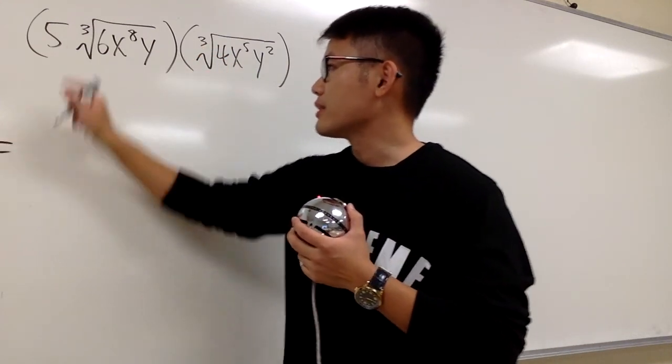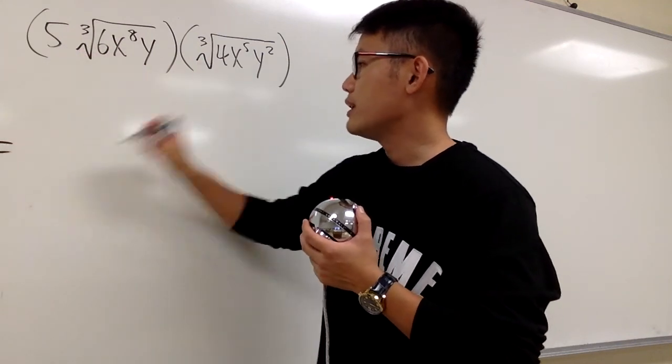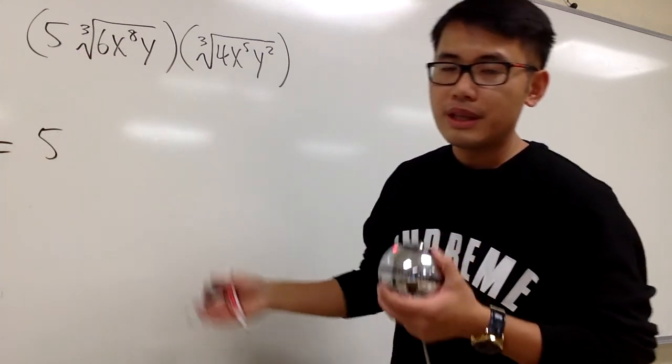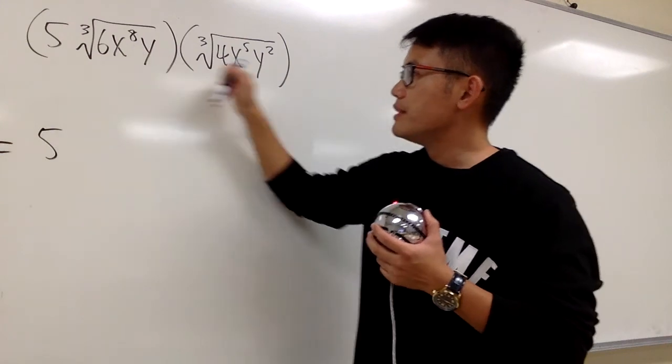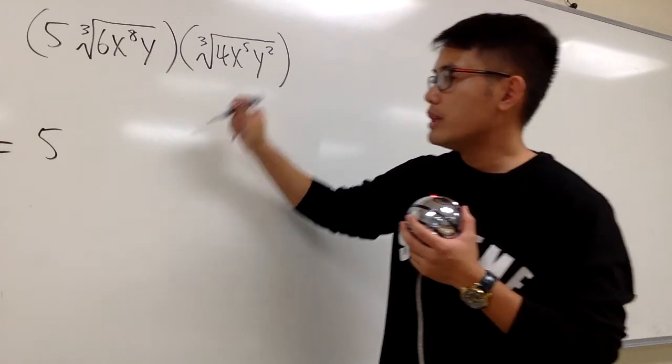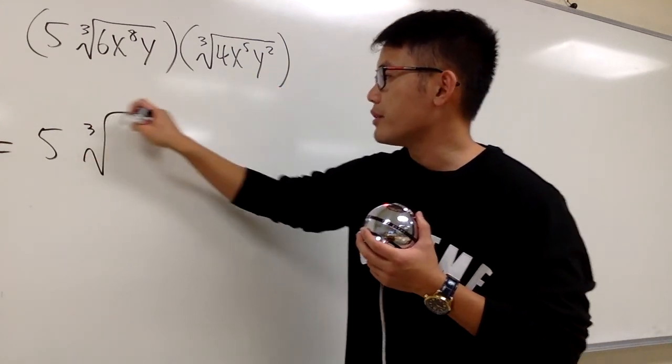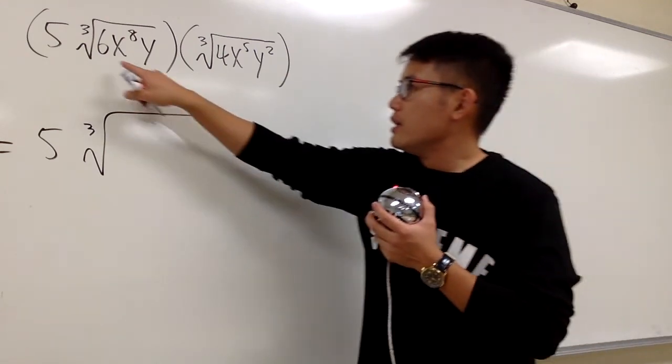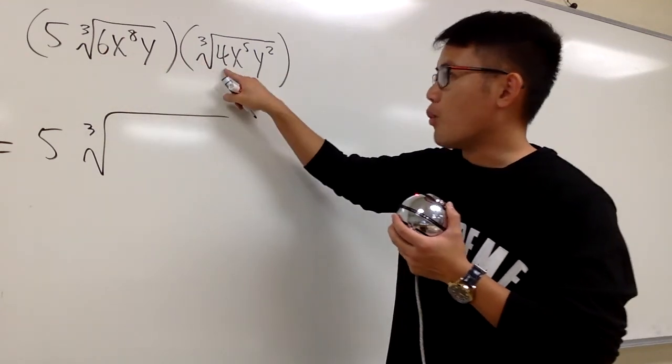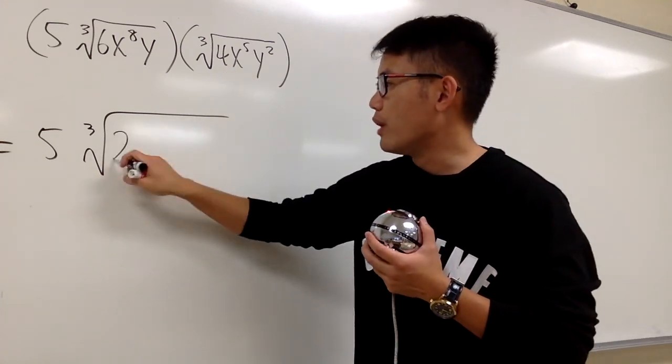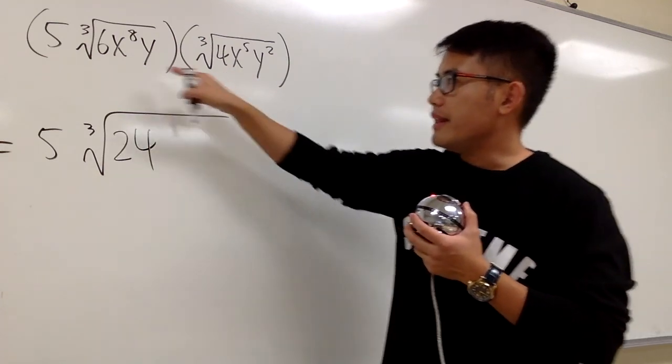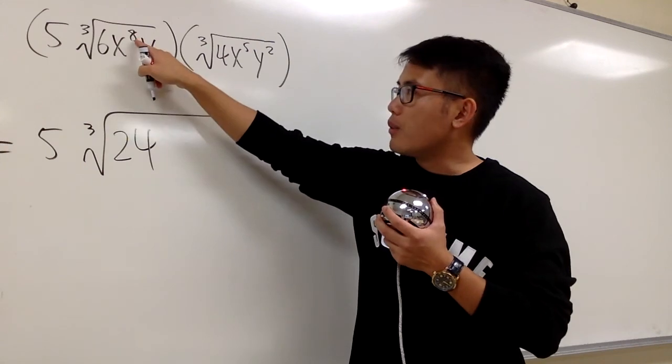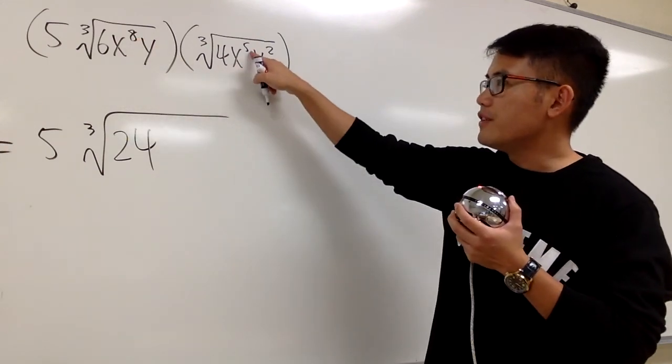Based on the numbers on the outside, 5 times 1 is just 5. Next, both of these two are the cube root. Let me just open the cube root right here. We are going to multiply the insides together. As we can see, we have 6 times 4, that's going to give us 24, and that stays inside.